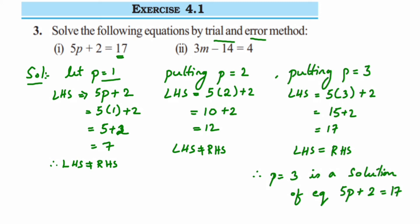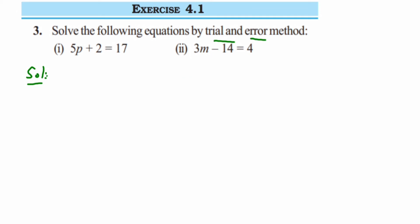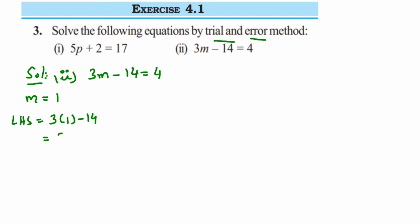Now let's take the second question: 3m minus 14 equal to 4. Let's start with m equal to 1. If m equal to 1, then LHS is 3 into 1 minus 14, which is 3 minus 14, giving a negative answer of minus 11. The RHS is positive 4, so LHS is not equal to RHS.